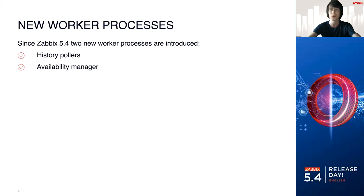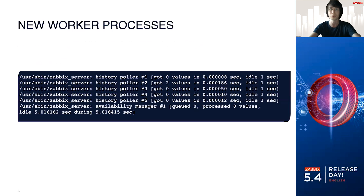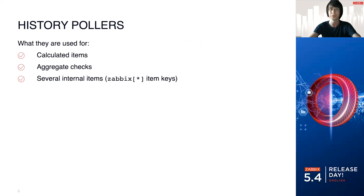Since Zabbix 5.4, we have history pollers and availability manager. If you have upgraded your Zabbix already and log into your server and run PS and grep by Zabbix underscore server, you will notice these new processes. By default, we have history pollers and availability manager. Since calculated items and aggregate checks represent a different type of items, now they have their own poller — that's the history poller.